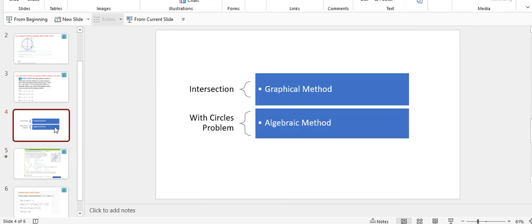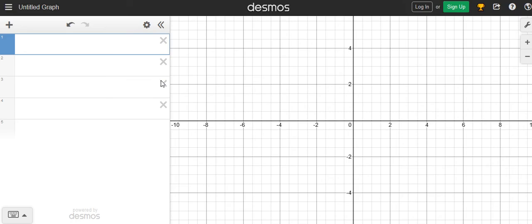First, I'm showing you the graphical method for finding the intersection points. Let's go back to Desmos and type the equation of the circle.